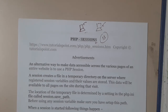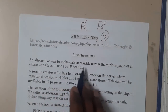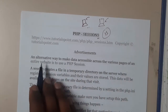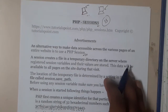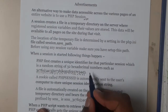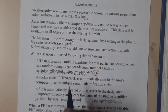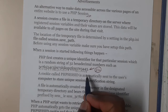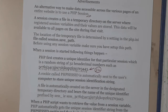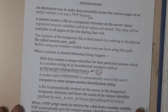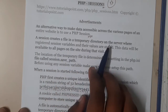Those multiple-page data will be stored in sessions. An alternate way to make data accessible across the various pages of an entire website is using sessions. Sessions will have a unique ID of 32 hexadecimal digits — you can't call it 32 bits because bits will give you a different meaning. A session creates a file in the temporary directory on the server where registered session variables and their values are stored.